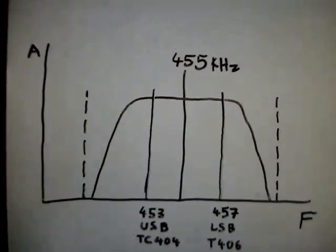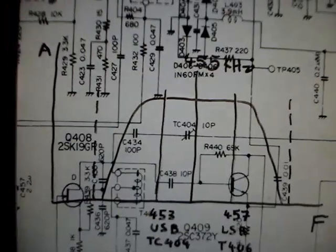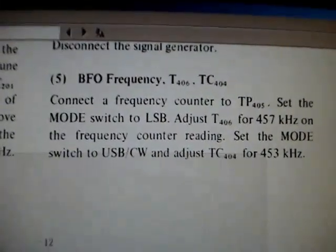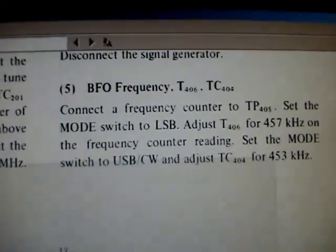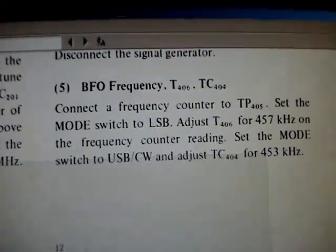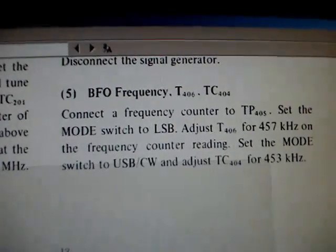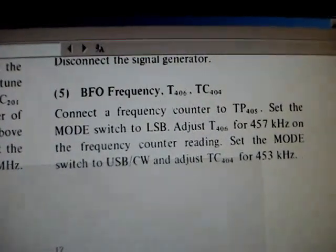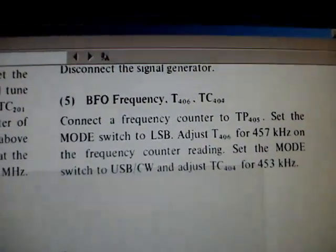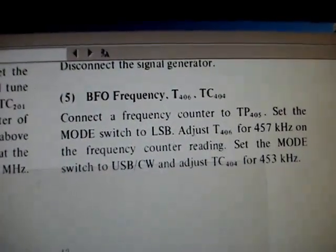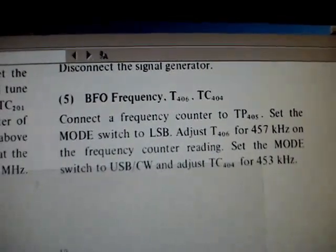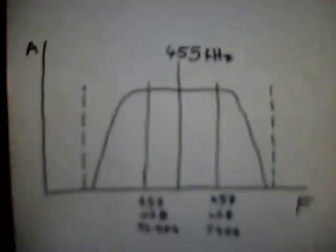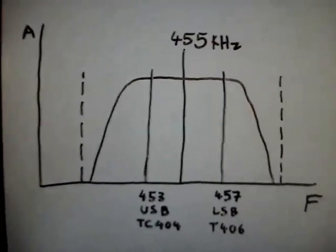This line here is the passband of the filter. What the manual states is, if you're going to have this receiver aligned as the manual states, you connect the frequency counter to TP405 and set the mode switch to LSB, adjust T406 for 457 kilohertz, then set the mode to USB/CW and adjust TC404 for 453 kilohertz.